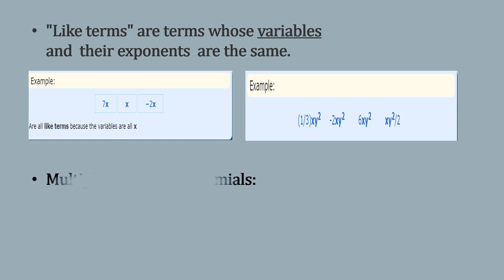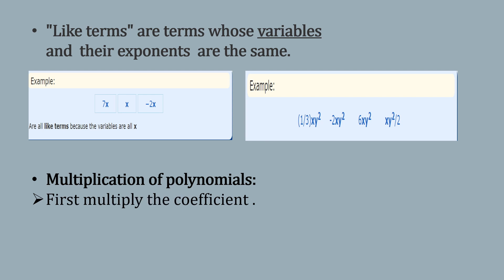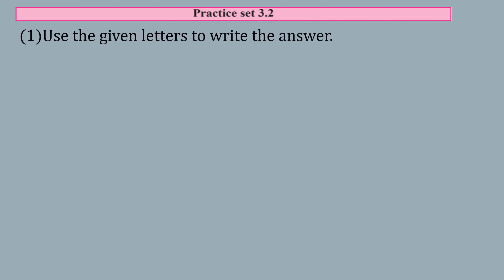In multiplication of polynomials, you have to remember two things: first, multiply the coefficient — the number which is before the variable — and second, multiply the variables. First multiply the coefficients, then multiply the variables. Using this rule we will start with exercise 3.2.